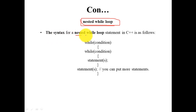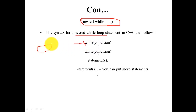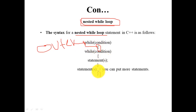The nested while loop is called the nested while loop. The loop contains contents and inclusions. The outer loop is called the outer loop. This is the outer loop.